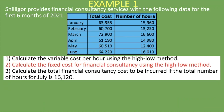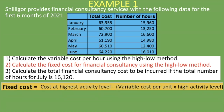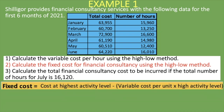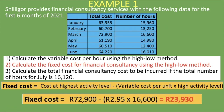Now let's look at requirement two: calculate the fixed cost for financial consultancy using the high-low method. The formula is the cost at the highest activity level minus the variable cost per unit multiplied by the high activity level. The highest activity level is March at 16,600 hours, with a cost of R72,900. So it's R72,900 minus the variable cost per unit — R2.95 (calculated in requirement one) — times the high activity level of 16,600 hours.